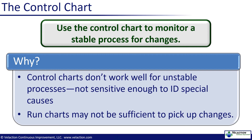So why not just use a run chart once a process is stable? You would be correct in assuming that once you stabilize your process, big problems will stand out like a sore thumb and would show up as a spike on your run chart. The benefit of a control chart versus a run chart is that it is more sensitive to small changes. Little shifts in your process, such as machines slowing down, will show up in your control chart long before they become visible to the naked eye.